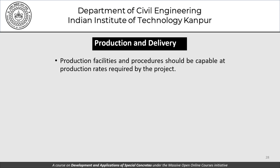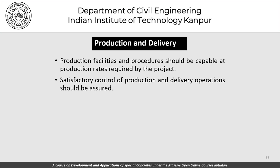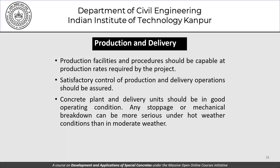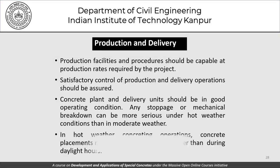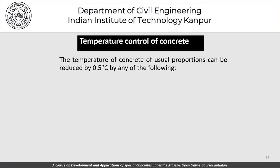Production facilities and procedures should be capable of meeting required production rates with satisfactory control of production and delivery. The concrete plant and delivery units should be in good operating condition — stoppages and mechanical breakdowns are more serious under hot weather than in moderate weather. Concrete placement may be scheduled at times other than daylight hours to take advantage of lower ambient temperatures.